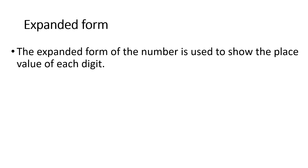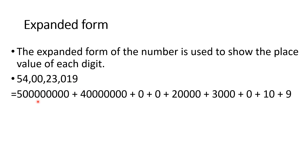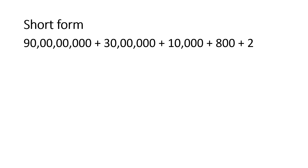The expanded form of a number is used to show the place value of each digit. We need to find the place value of each digit and write them with the addition sign. For example, the place value of digit 5 is 50 crore. So the expanded form is: 50 crore + 4 crore + 0 + 0 + 20,000 + 3,000 + 0 + 10 + 9. The standard form of this number is 90 crore, 30 lakh, 10,802.